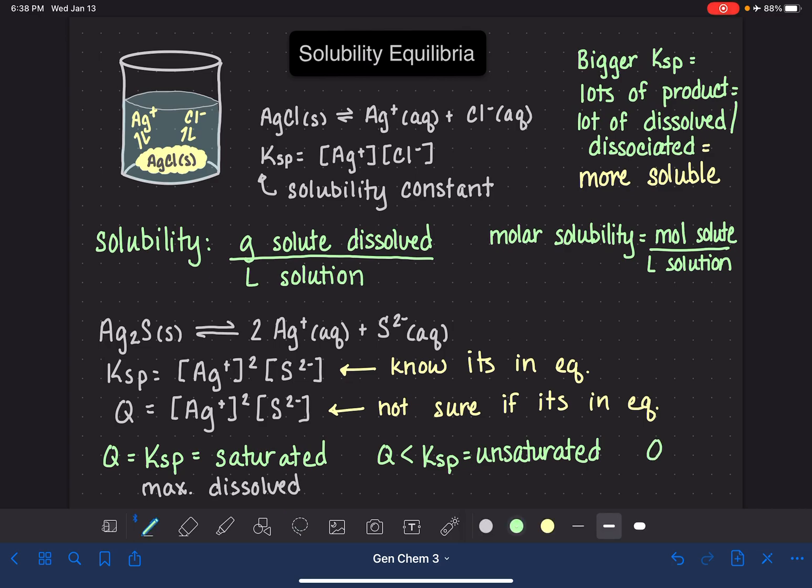And if Q is greater than KSP, this is a situation that doesn't happen very often. If Q is greater than KSP, that means that the concentrations of our dissolved ions are larger than what they should be. This is a solution that we describe as being supersaturated. Somehow we have managed to trick this solution into allowing a little bit extra ions to be dissolved.